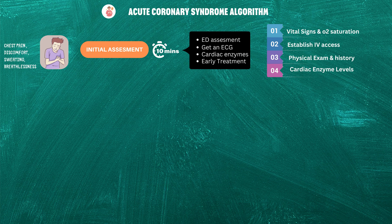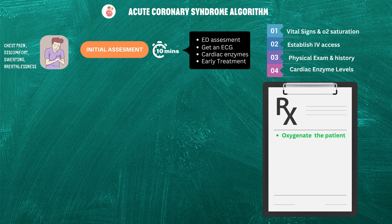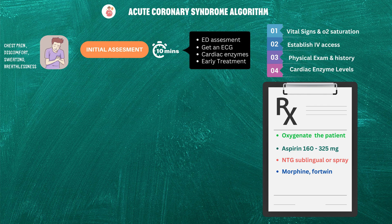While doing this concurrent ED assessment, general treatment is advised as follows: if oxygen saturation is less than 90%, oxygenate the patient. Give aspirin 160 to 325 mg. Use NTG spray and an analgesic such as Fortwin or morphine if pain is not relieved by NTG.